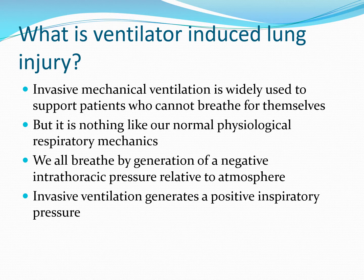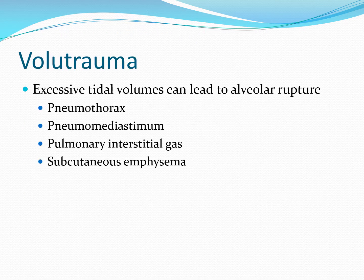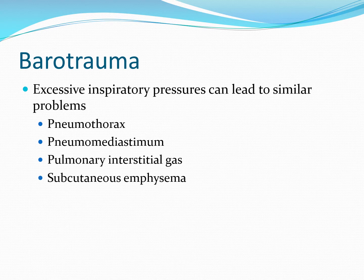As a result, it can do a lot of damage. One of the most obvious types of damage is volutrauma — excessive tidal volumes leading to rupture of alveoli. This can cause pneumothorax or pneumomediastinum, gas leaking into lung tissue as interstitial gas, and subcutaneous emphysema. Often going hand in hand with volutrauma is barotrauma: excessive inspiratory pressures leading to similar problems.